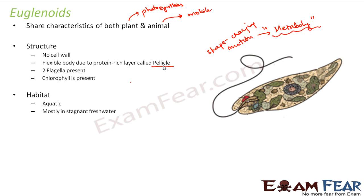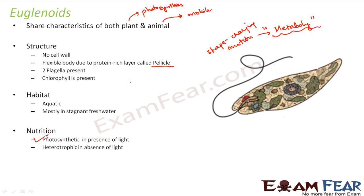Regarding habitat, Euglenoids are found in aquatic habitats, mostly in stagnant fresh water — water that is collected and does not run. Regarding nutrition, they are photosynthetic because they have chlorophyll, but only in the presence of light. In the absence of light, they are heterotrophic, meaning they are capable of feeding on other organisms. When heterotrophic, they can also be parasitic, living inside the body of other living organisms.